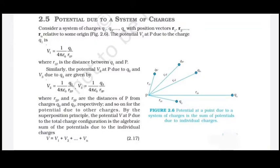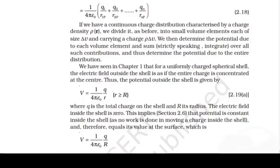The resultant potential is V = V1 + V2 + V3 + ... + Vn, which equals (1/4πε₀)[q1/r1p + q2/r2p + ... + qn/rnp]. This superposition principle gives the total potential at any point due to the system of charges.